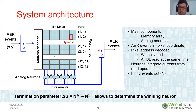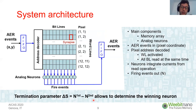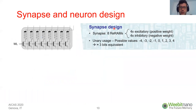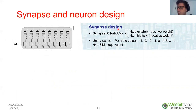Since this is a spiking network, we need a time analysis of the output. We have a termination parameter delta S, which is the difference between the number of spikes emitted by the first and the second most spiking neuron. This allows us to determine the winning neuron. If we set a threshold for this quantity, we can calibrate the recognition accuracy and energy.